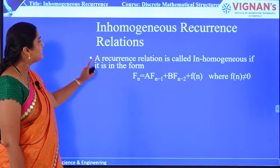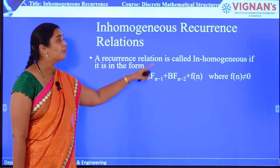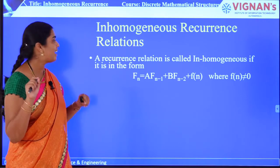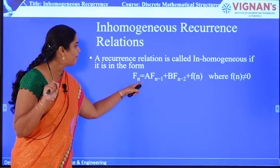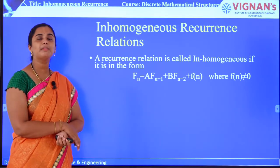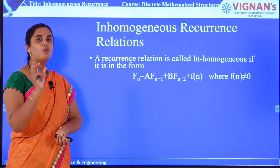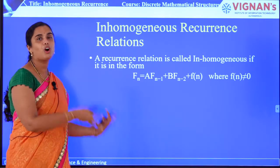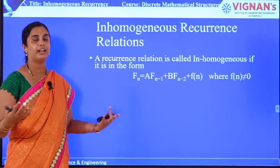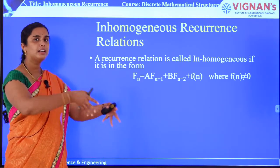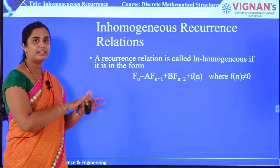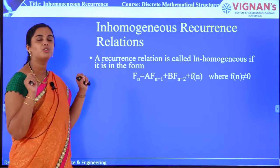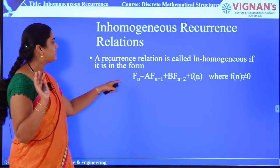A recurrence relation is called inhomogeneous or non-homogeneous if it is of this form. Homo means which belongs to the same category or same type. Non-homo means it is a little bit different. So how do you need to solve such a non-homogeneous or inhomogeneous recurrence relation?